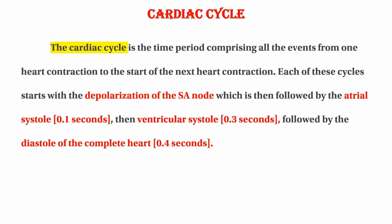Each of these cycles starts with the depolarization of the SA node, which is then followed by the atrial systole. Atrial systole, or atrial contraction, is 0.1 seconds, and the atrial diastole period is 0.3 seconds.